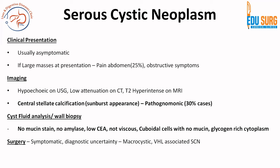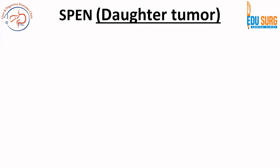For serous cystic neoplasm types, microcystic adenoma — most of them can be observed. Surgery is reserved for symptomatic patients or when there is diagnostic uncertainty in cases of macrocystic, multilocular, or VHL-associated serous cystic neoplasms. Yearly follow-up is sufficient for surveillance, and we will see how the guidelines discuss surveillance and surgery for these cystic neoplasms.